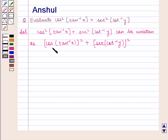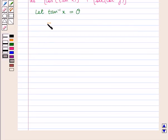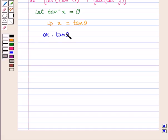First, let us solve cos of tan inverse of x. Let tan inverse of x be theta, which implies that x is equal to tan of theta, or we can write tan theta is equal to x.